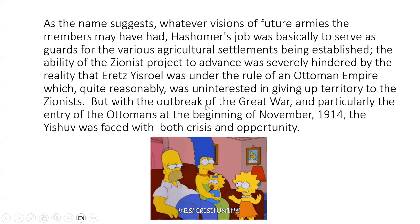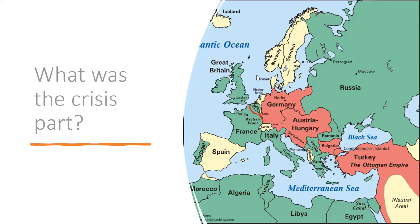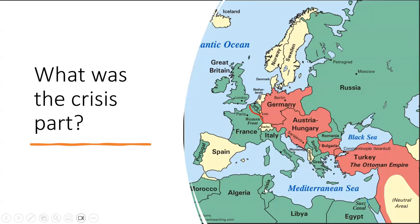There was a limit to what HaShomer could actually do, but on a good day it could at least keep Jews from being attacked. With the outbreak of the Great War in 1914, and particularly in November 1914 when the Ottoman Empire entered on the side of the Central Powers, the Yishuv faced both crisis and opportunity. Most of the Jewish migrants had come from the Russian Empire, which meant most were now enemy non-combatants — citizens of a hostile state. So there was a mass migration of Jews out of Eretz Israel and an immediate demographic decline.